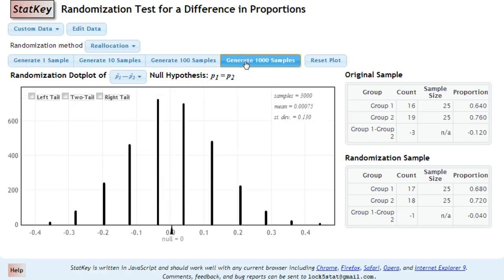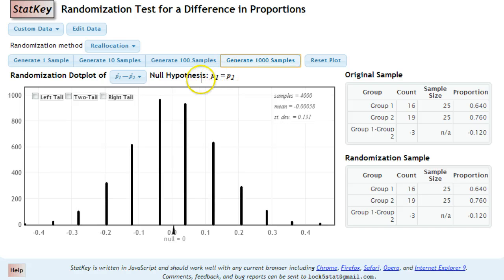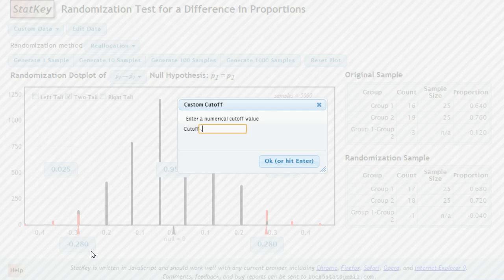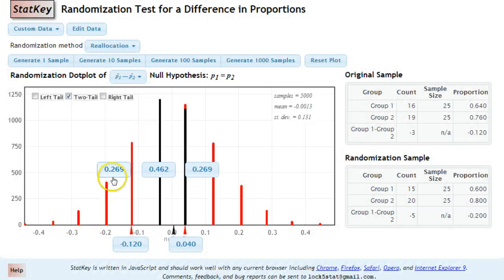We generated a bunch of different samples. Since the null hypothesis is that the two proportions are equal, the null is that the difference between the two proportions is going to be zero. We have a sample difference of negative 0.12. Since we said not equals tests, we are going to do two tail. We are going to adjust this to negative 0.12. And you will see that we get 0.269 on either side or something very close to that.